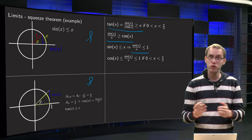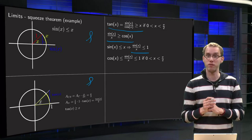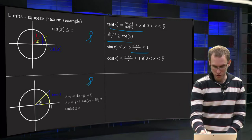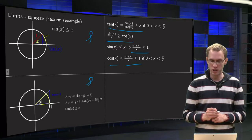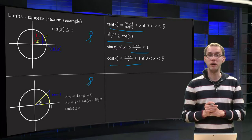So that means that we have two bounds on sine of x over x. We know that it is smaller or equal than 1 and we know that it is bigger or equal than the cosine of x for x between 0 and pi over 2.